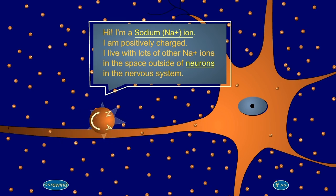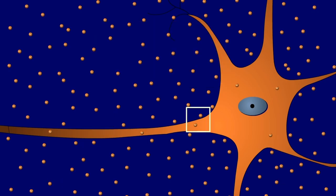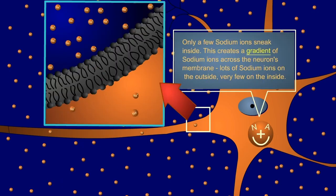Hi, I'm a sodium ion. I am positively charged. I live with lots of other sodium ions in the space outside of neurons in the nervous system. Only a few sodium ions sneak inside. This creates a gradient of sodium ions across the neuron's membrane. Lots of sodium ions on the outside, very few on the inside.